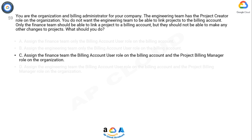Option C is correct. To enable billing for a project, you need permissions adequate to link the project to the target cloud billing account. You need both project permissions and billing account permissions. The predefined roles required are: on the project, project billing manager plus project viewer or project owner; and on the target cloud billing account, billing account user plus billing account viewer or billing account administrator. The correct answer is Option C.